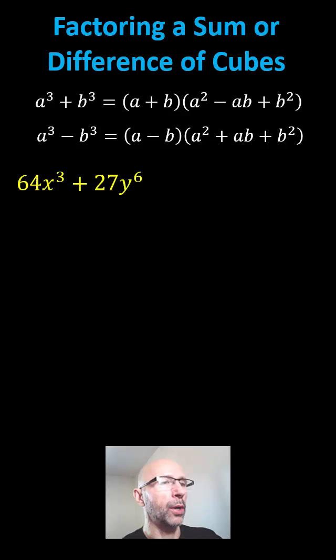Let's factor 64x cubed plus 27y to the sixth. Recall the first step in any factoring problem is to check for the greatest common factor. In this case, the only common factor is one, and therefore we proceed to see if we have a sum of cubes.